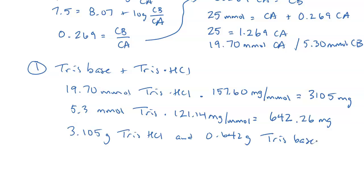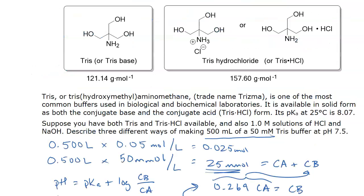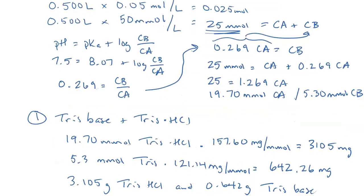And if the question wants you to describe how you would make that, you need 500 milliliters, 50 millimolar, pH 7.5. So I would say, go ahead and get 450 milliliters of deionized water. Dissolve in these amounts of the Tris conjugate acid and Tris conjugate base. And then mix thoroughly, put into a volumetric flask, dilute it up to the mark, and you're done. Method number one.